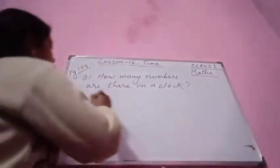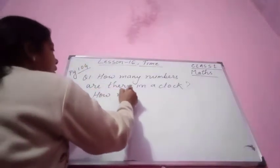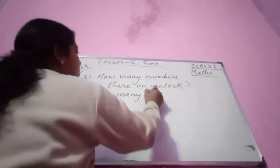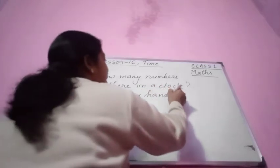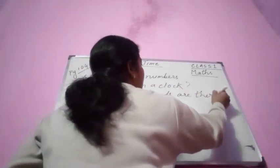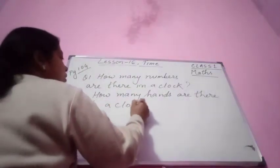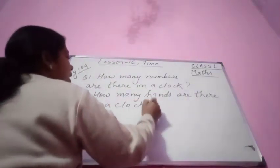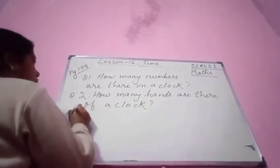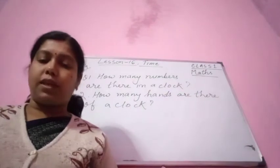There are 2 hands of the clock. How many hands are there of a clock? There are 2 hands of the clock. You have to write the answer yourself.